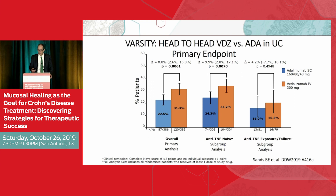This is an ulcerative colitis study, but I wanted to show it because it's the first comparative effectiveness study we have on two biologics in UC — from the Victory Consortium. The orange is vedolizumab, the blue is adalimumab, and you can see vedolizumab is superior to adalimumab for the treatment of ulcerative colitis.